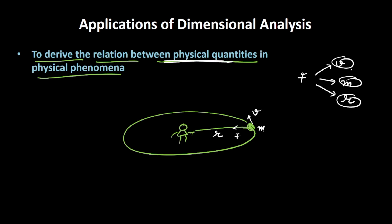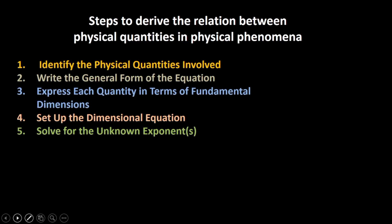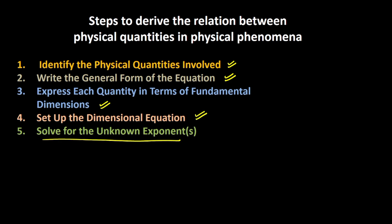These — velocity, mass, radius, and force — are the physical quantities involved, and we want to understand the relationship between them. The steps are: first, identify the physical quantities involved; second, write the general form of the equation; third, express each quantity in terms of fundamental dimensions; fourth, set up the dimensional equation; and finally, solve for the unknown exponents.